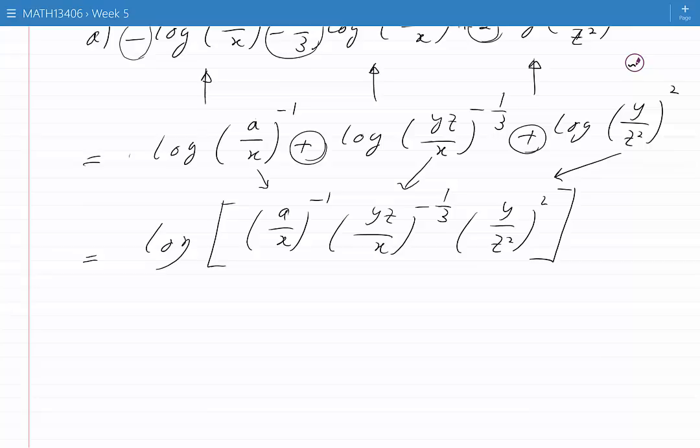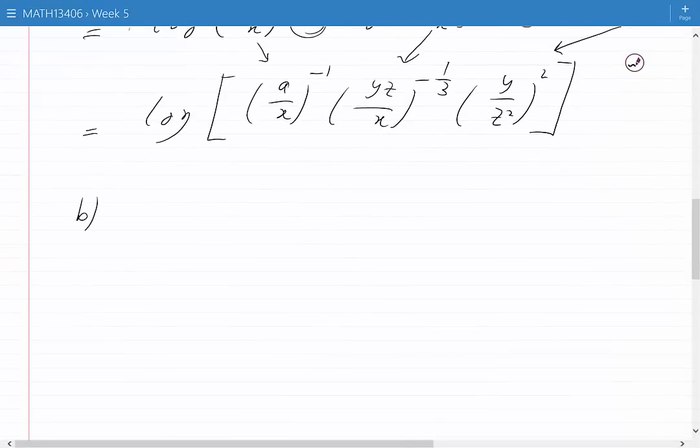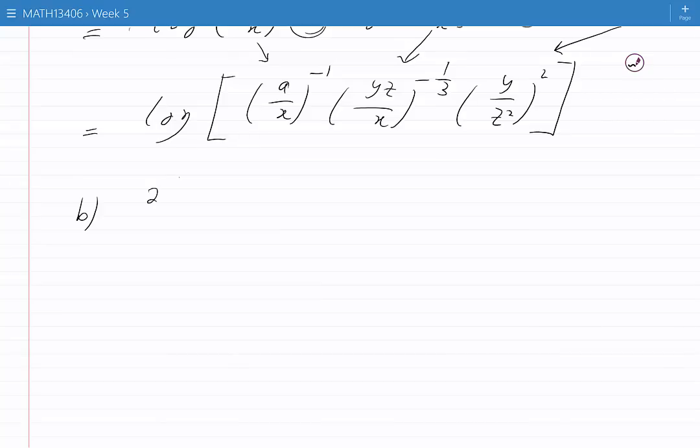Now let's look at case B. We have 2 log X over 3 plus 3 log Y over 2. We can rewrite this expression as 2/3 log X plus 3/2 log Y.